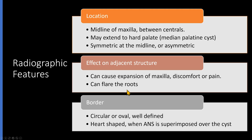Just like any other cyst, the border is well-defined. The shape is circular or oval. However, if you take a periapical or an occlusal radiograph, the anterior nasal spine may superimpose over the cyst, giving it the shape of a heart. Let's review two such cases.